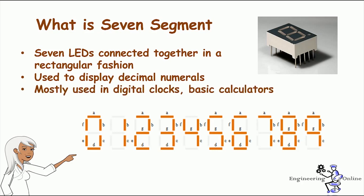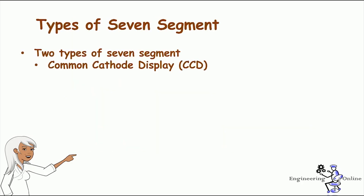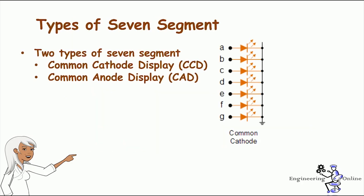The LEDs are fabricated in such a way that lighting of each LED is contained to its own segment. Seven segment displays are of two types: common anode and common cathode. The internal structure of both types is nearly the same; the difference is the polarity of the LEDs and the common terminal.